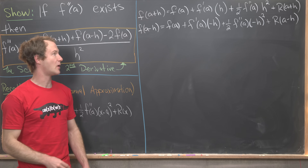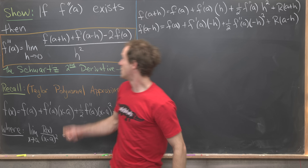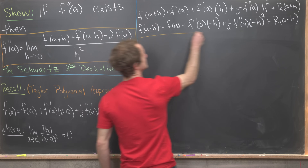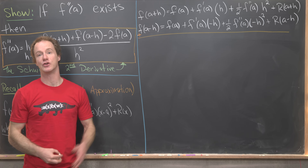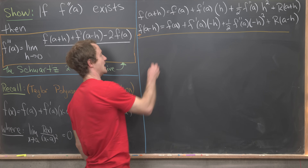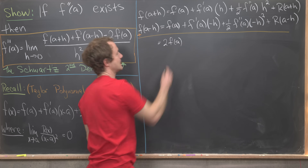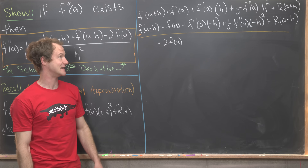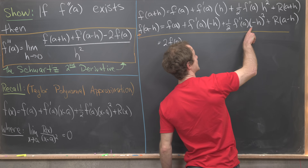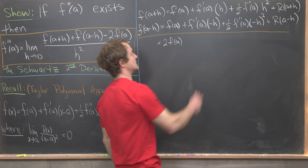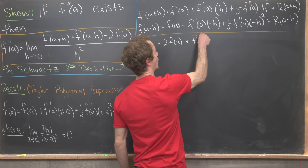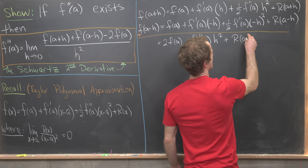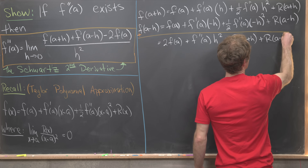These two expressions make up parts of our numerator, so let's find their sum. We get f of a plus f of a, giving two times f of a. The f prime of a terms — one attached to h and one to minus h — cancel. The one-half f double prime of a terms build up, giving a whole f double prime of a times h squared. Then we have the two remainder terms: r of a plus h plus r of a minus h.